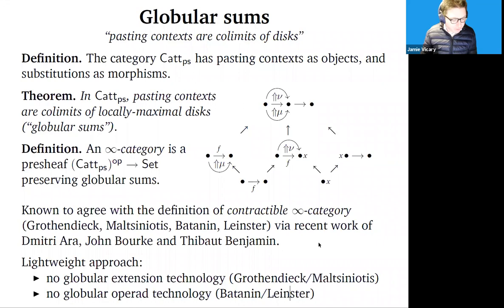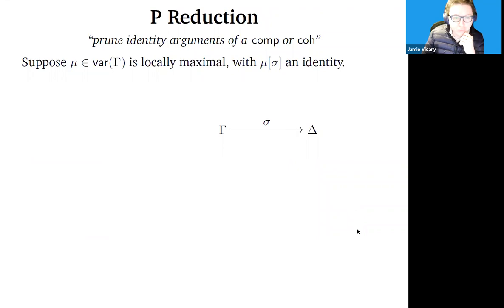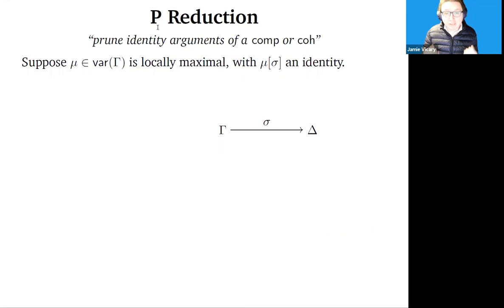Now let's talk about strict units. How are we going to take this type theory for infinity categories and start to work with the unit structure? Here are the key ideas. The most important one is called p-reduction, where 'p' stands for pruning.